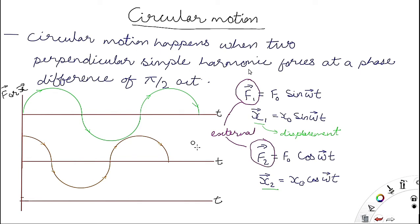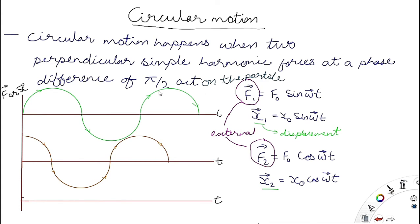Circular motion happens when two perpendicular simple harmonic forces act on a particle, and these two forces have a phase difference of pi by 2, meaning 90 degrees. Both forces must have the same amplitude F0. So circular motion is produced by two perpendicular simple harmonic forces with a 90-degree phase difference and equal amplitudes.